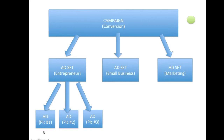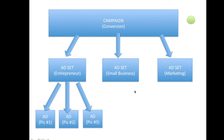For each ad set you can have multiple ads — the actual ad itself, with a headline and picture. In this example we have three ads and we're testing different pictures: one is a picture of you on a beach, one is a general business picture of somebody on a laptop, and one is somebody on an airplane working on their computer. Each ad has a different picture. You can also test different headlines or text. You can have multiple ads in one ad set, and multiple ad sets in one campaign — it's like a pyramid.